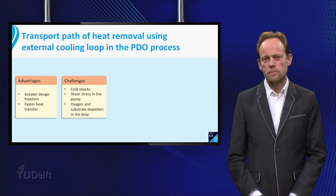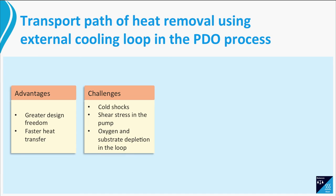External cooling loops also present challenges. The microorganisms have to be capable of handling the cold shocks, which are more severe than with cooling coils. Also, there is a relatively high shear rate in the transport pump, which can cause damage to the microorganisms. Another disadvantage is that you need a special type of pump that will prevent contamination, which requires good capital investment as well as extra costs for electricity and maintenance.